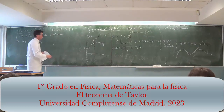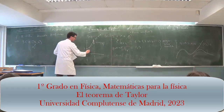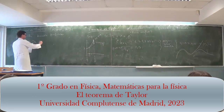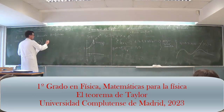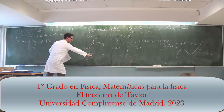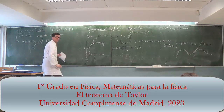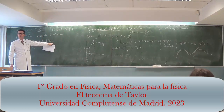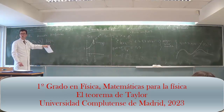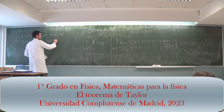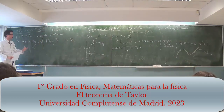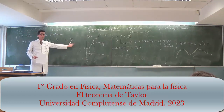There exists a C — maybe it's this one — such that the function at X equals — notice that now I don't write approximately, I write equals — and I'm going to write two things: the polynomial and the remainder. What the Taylor theorem says is: once the polynomial is written, what is the remainder?